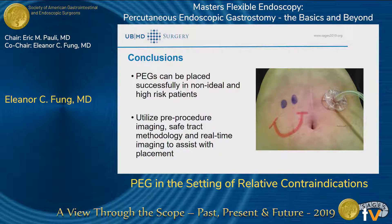In conclusion, I wanted to highlight the importance of pre-procedure imaging, using safe-tract methodology, and real-time imaging adjuncts to help with PEG tube placement in non-ideal and high-risk patients. It really is safe and possible — it just depends on having a good goals-of-care discussion. Thank you.